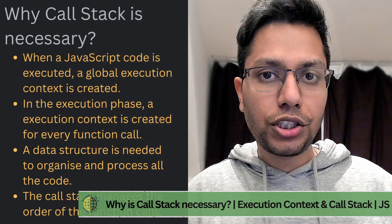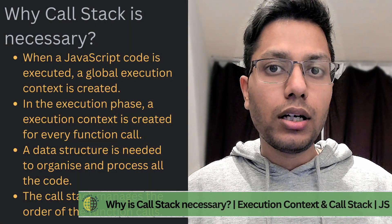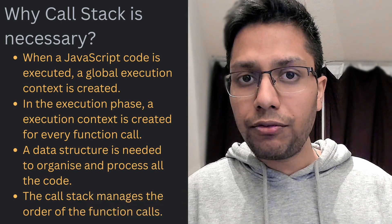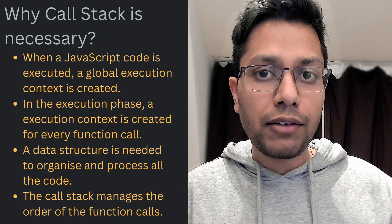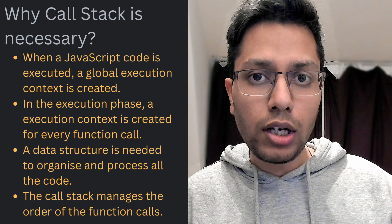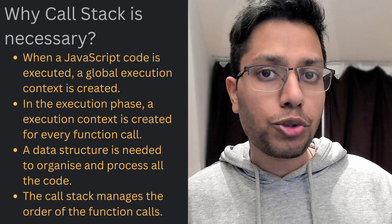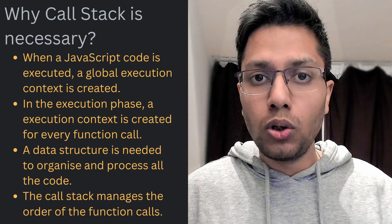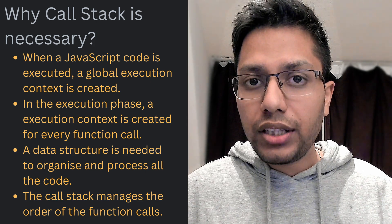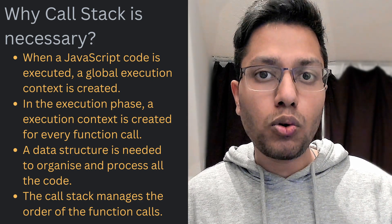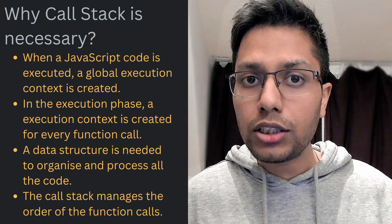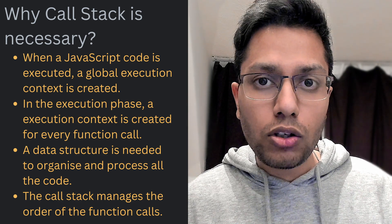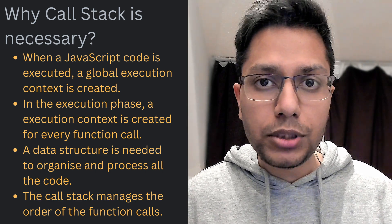When JS code is executed, a global execution context is created, and in the execution phase whenever it encounters a function call, a corresponding execution context is created for it. So the engine needs some sort of data structure to organize and process all this code in a logical manner. This is where the call stack comes into the picture.